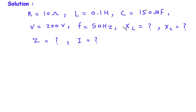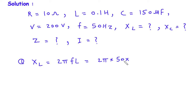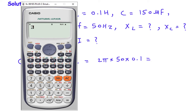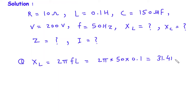First of all we will find inductive reactance. Number 1: XL is equal to 2 pi F into L. So this will be 2 pi multiplied by frequency 50 hertz, multiplied by inductance 0.1 Henry. This will be 31.41 Ohm. Therefore XL is equal to 31.41 Ohm.